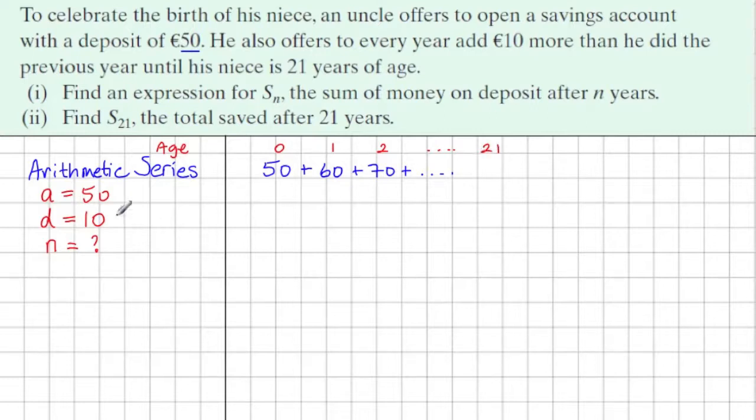We can see here that there is 22 terms in this series. So in this question, in total it's going to go on for 22 investments, 22 presents from this uncle.